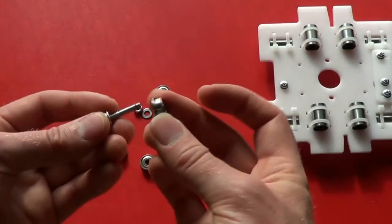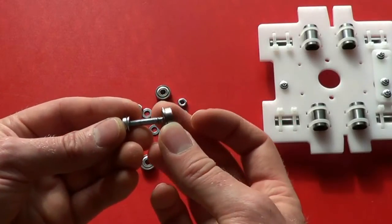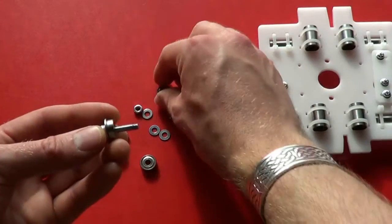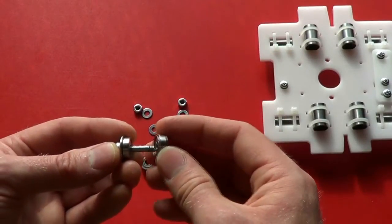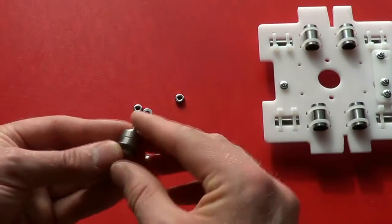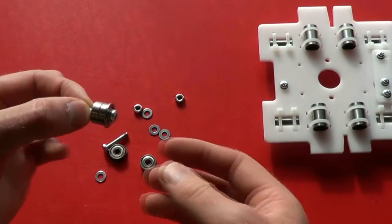Put on a flanged bearing with the flange towards the head of the screw. Then put on a plane bearing. Another washer. And that's that assembled.